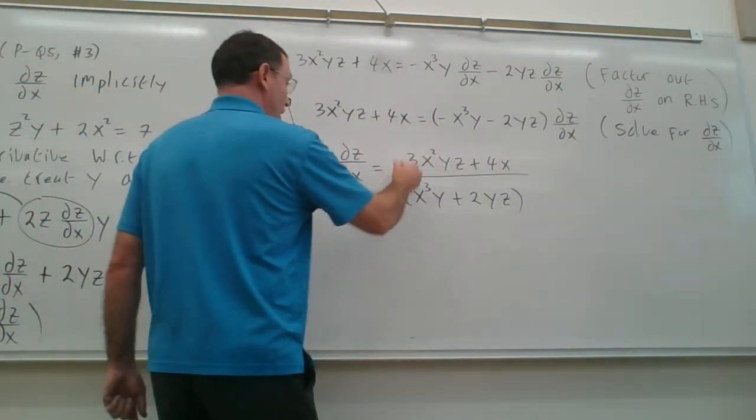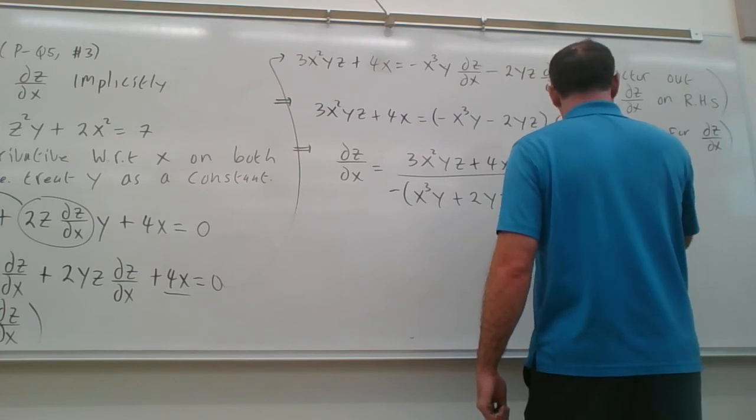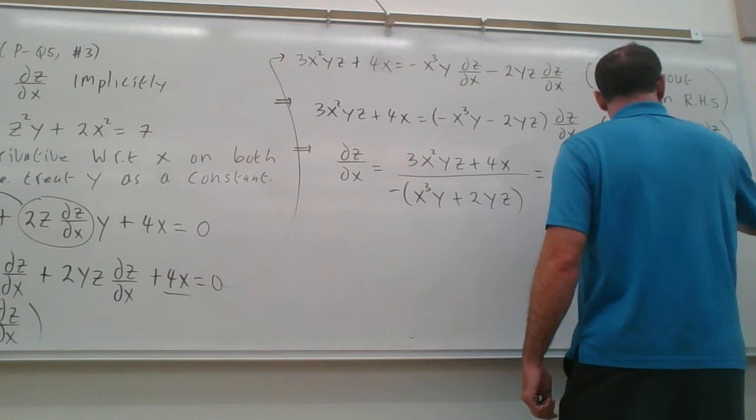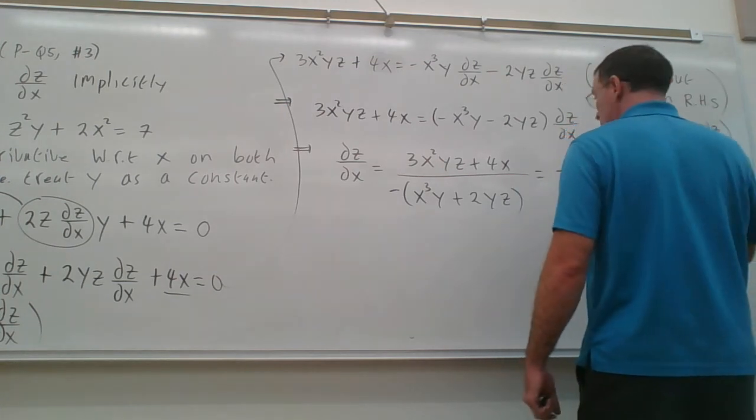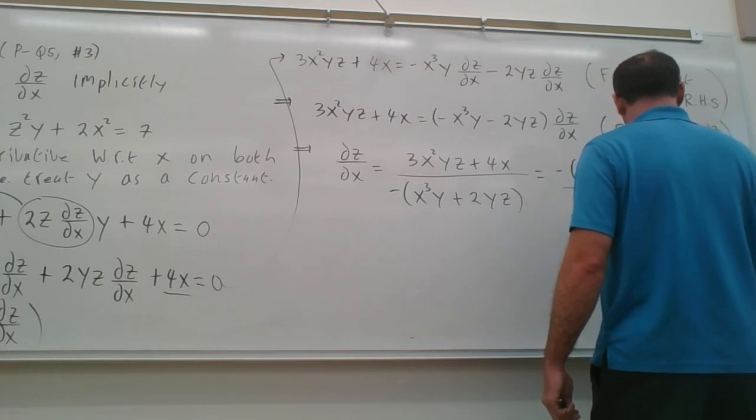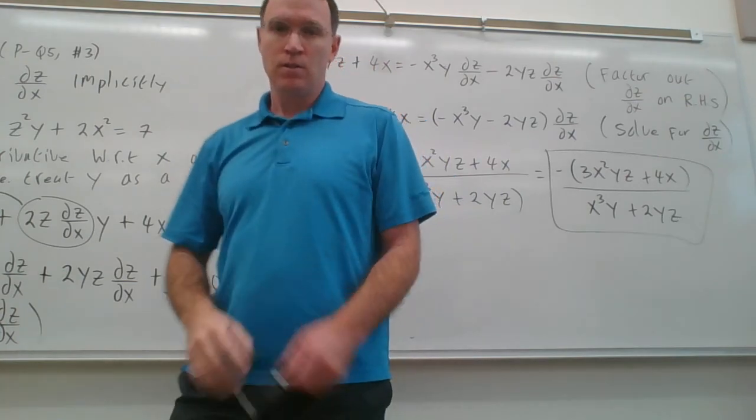If you wanted to, you could bring that minus sign to the top then. So we should write this then: minus 3x²yz plus 4x all over x³y plus 2yz. So that's our answer. So we're done.